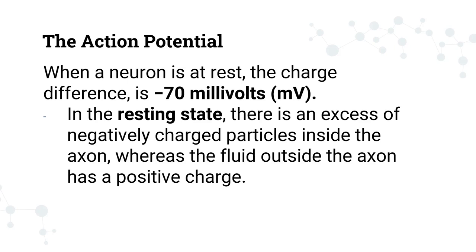When a neuron is at rest, since there is fluid inside and outside the neuron, there's a difference in charge inside and outside called the potential. The difference in potential between inside and outside the cell is at negative 70 millivolts, so it's negatively charged during the resting state. Specifically, in the resting state, there is an excess of negatively charged particles inside the axon, whereas the fluid outside has a positive charge.